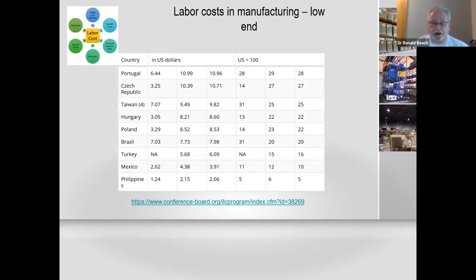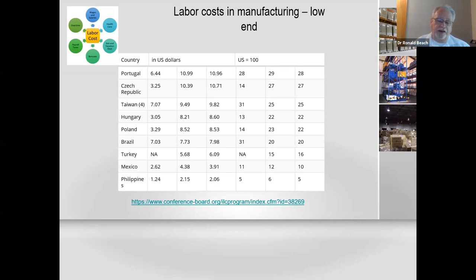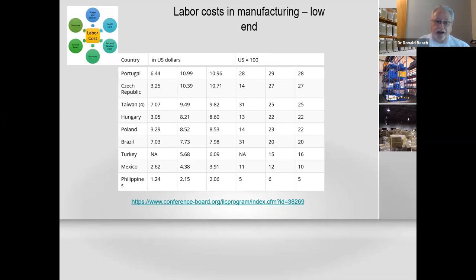On the other end of the scale, using the $100 an hour US comparison, the Philippines is $5 an hour and Mexico is $10 — and this is with benefits. So if you're a manufacturer of clothing, you can see why they look at different countries. In Europe, the same type of issue occurred — a factory in Ireland shifted to Eastern Europe, specifically Poland, Turkey, and Hungary, due to the dollar-per-hour difference.